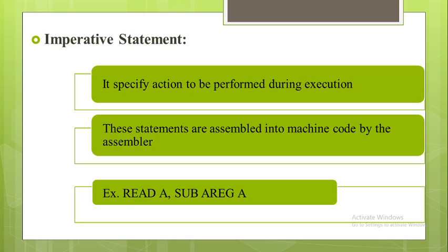Imperative statements specify the action to be performed during the execution of the assembled program. Imperative statements are assembled into machine code by the assembler. For example: READ A, ADD A Register A, and SUB A Register A — these statements specify the action to be performed.